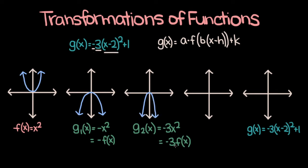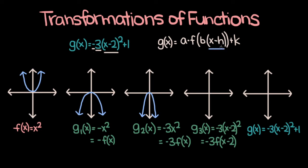Now let's add in x minus 2 instead of just x. So say we have a function g3 of x is equal to negative 3 times x minus 2, whole squared. If you want to write g3 of x in terms of f of x, then it's negative 3 times f of x minus 2. We know from our general form that the x minus h term causes horizontal shifts, and since we have x minus 2, g3 of x is going to be g2 of x shifted two units to the right. So if this is x equals 2, then g of x is going to look something like this.